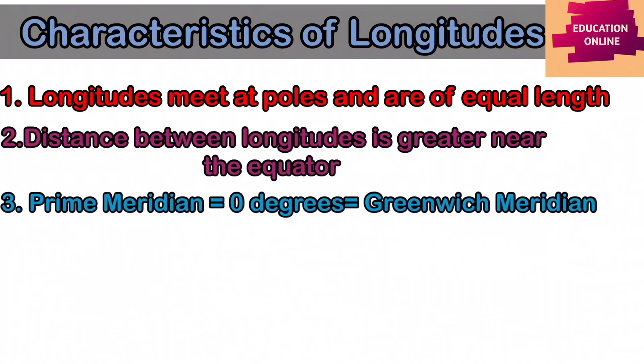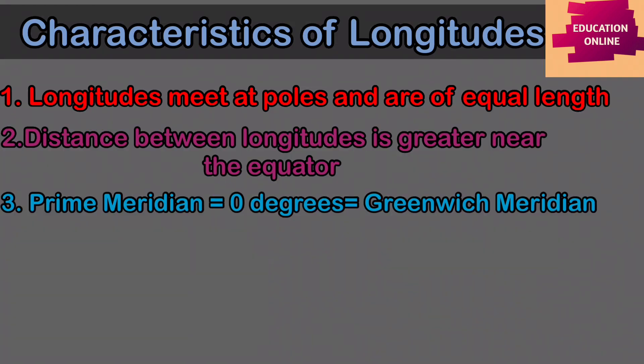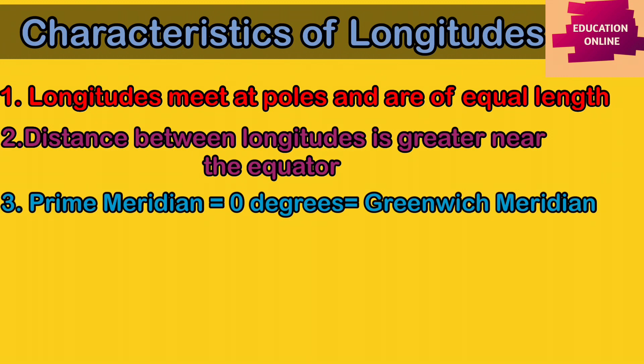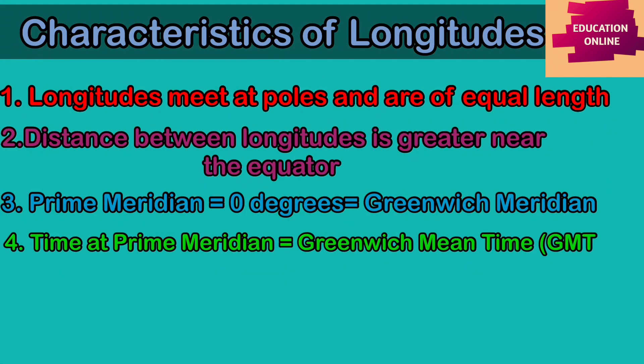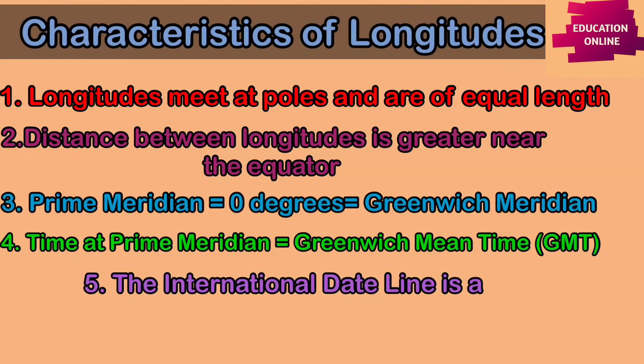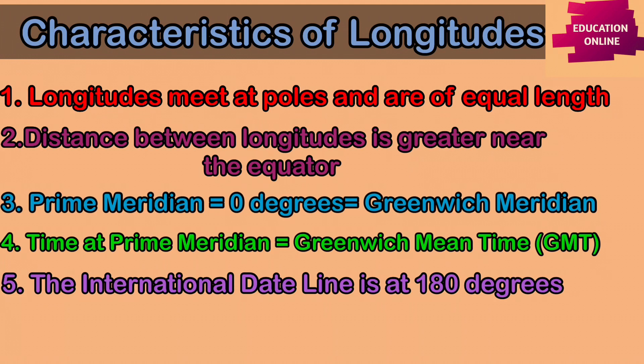It is considered to be the starting point of longitudes. The time of any place is calculated with the reference to the Prime Meridian. The time at the Prime Meridian is known as Greenwich Mean Time or GMT. The International Date Line lies opposite to the Prime Meridian at 180 degree longitude.